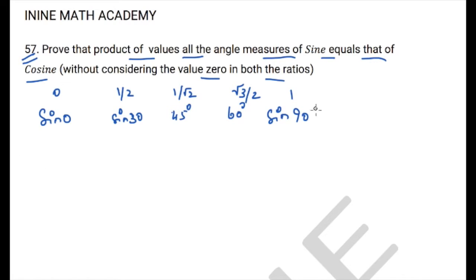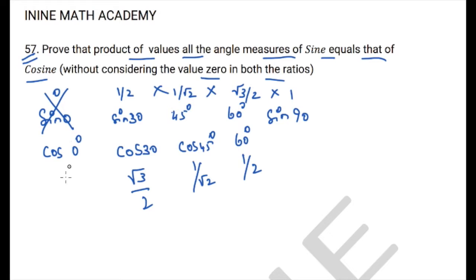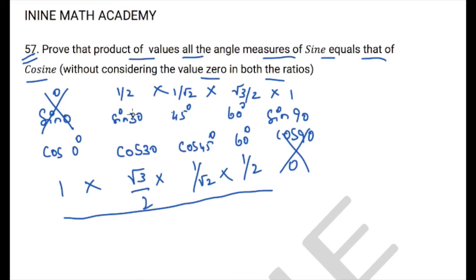Ignoring sin0 = 0, the product is 1/2 · 1/√2 · √3/2 · 1. For cosine: cos30 = √3/2, cos45 = 1/√2, cos60 = 1/2, cos0 = 1, and we ignore cos90 = 0. The cosine product is also 1 · √3/2 · 1/√2 · 1/2. Both products are equal, which proves the statement.